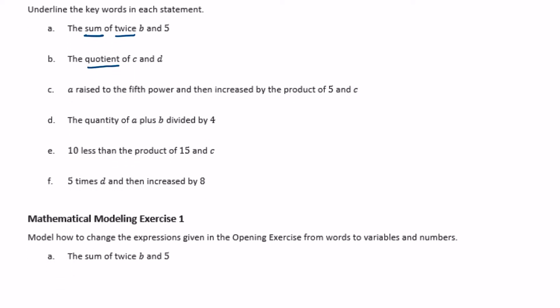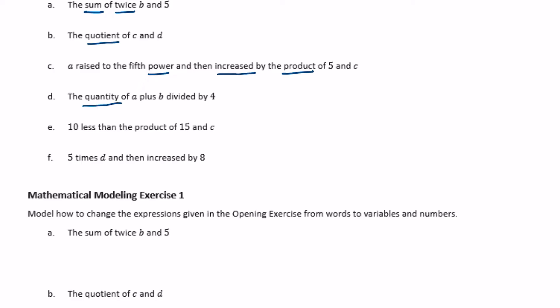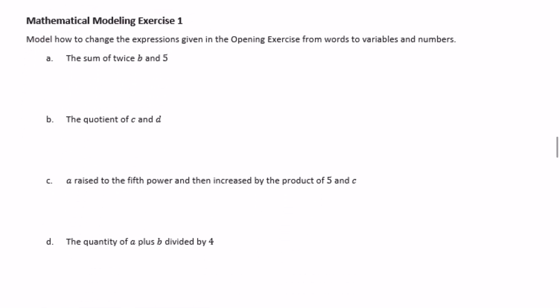A raised to the fifth power — the word 'power' tells us it's an exponent — then increased by the product of five and c. 'Increased' tells us to add and 'product' tells us to multiply. 'The quantity' means we keep something together: a plus b, divided by 4. Ten less than means we're subtracting — the product of 15 and c, 5 times d, increased by 8.